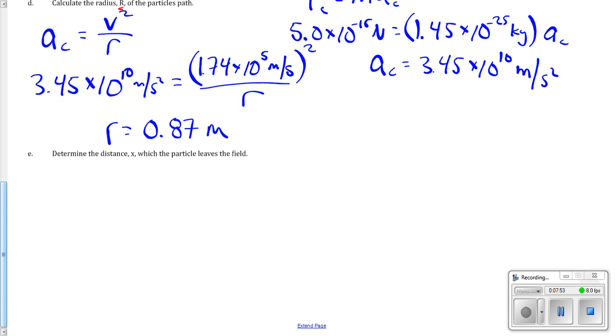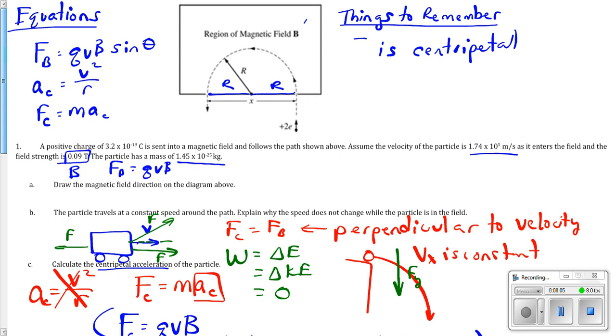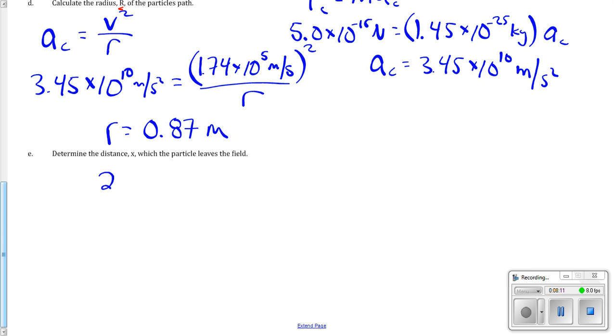Now, determine the distance X from which it leaves the field. So, how far is it actually going to travel here? 2R. Yeah, right. Okay, this is the distance R, so that's the distance of 2R total. So, 2 times 0.87 meters, which is 0.74 meters.